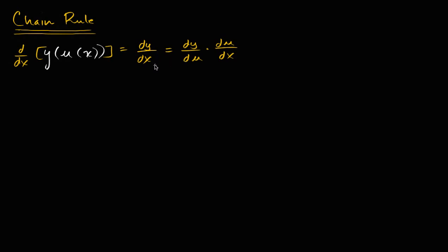But how do we actually go about proving it? Well, we just have to remind ourselves that the derivative of y with respect to x is equal to the limit as delta x approaches zero of change in y over change in x.